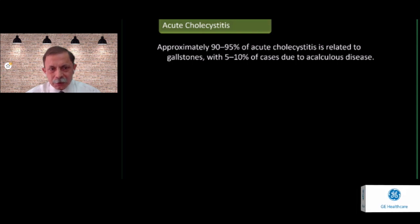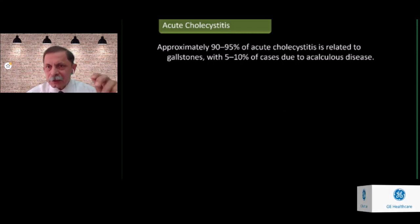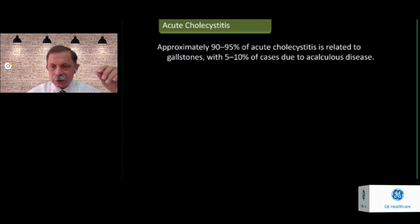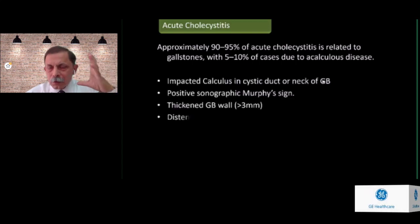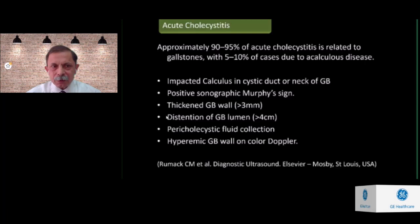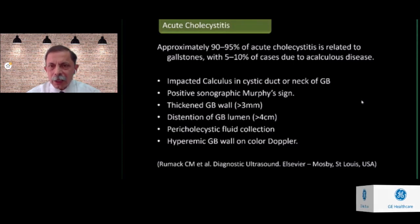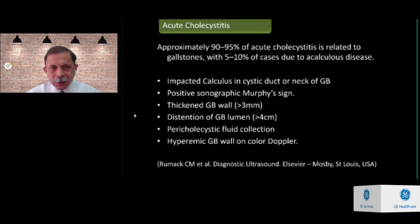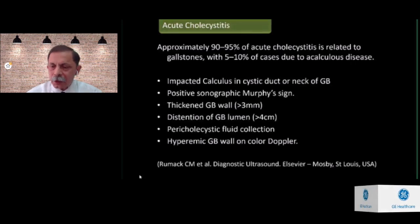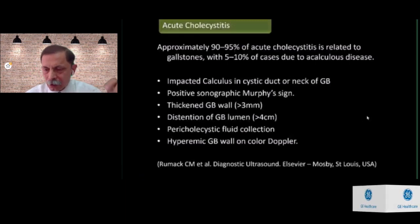Cholecystitis is the commonest disease of the gallbladder. About 90 to 95% of acute cholecystitis is related to gallstones, with 5 to 10% due to acalculous cholecystitis. Typical signs include an impacted calculus in the cystic duct or neck, positive sonographic Murphy's sign, thickened gallbladder wall greater than 3 mm, distension of the gallbladder lumen, pericholecystic fluid collection, and hyperemic gallbladder wall on color Doppler due to inflammation.